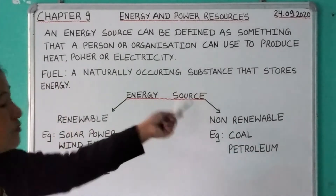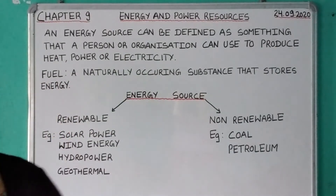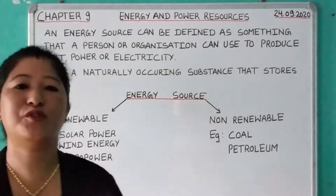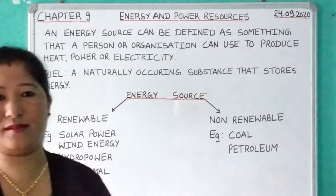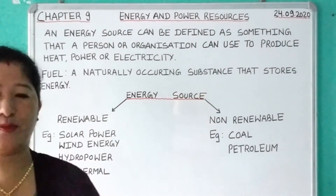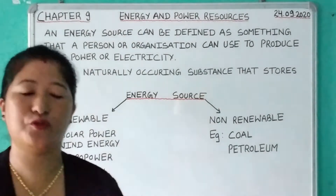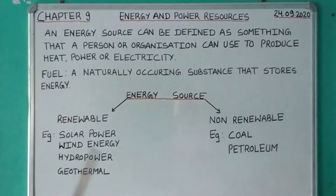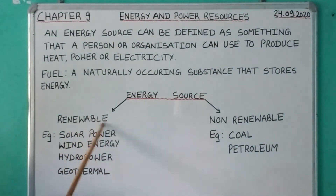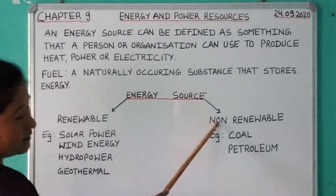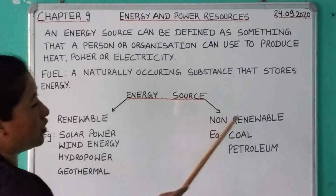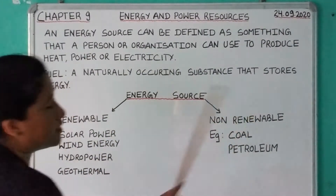These energy resources can be divided into two categories: number one is renewable energy, and number two is non-renewable sources.